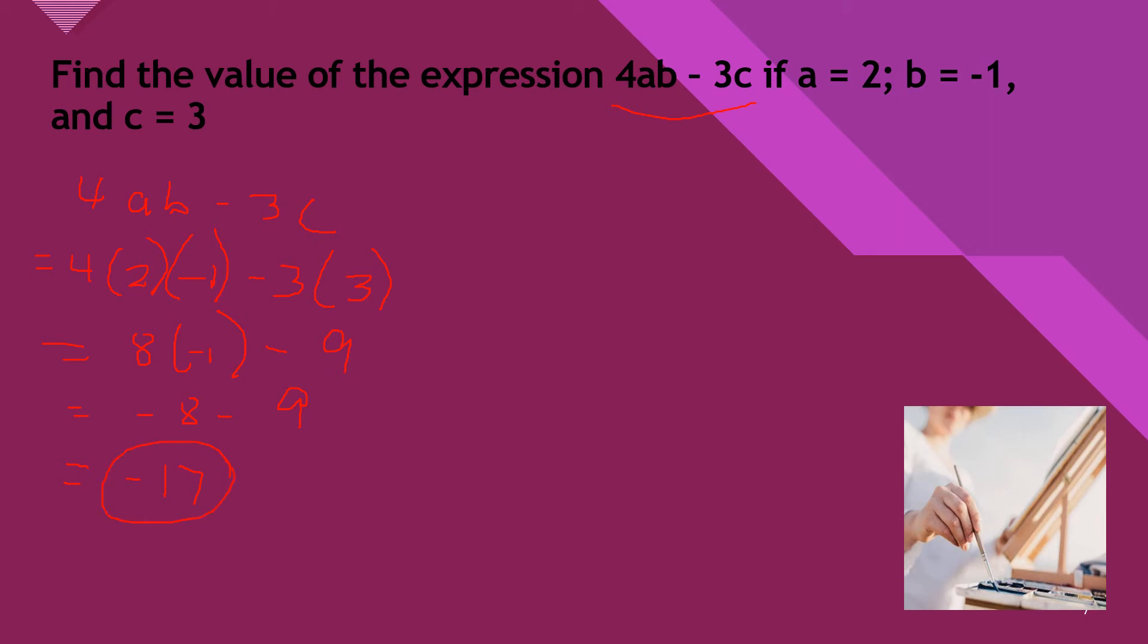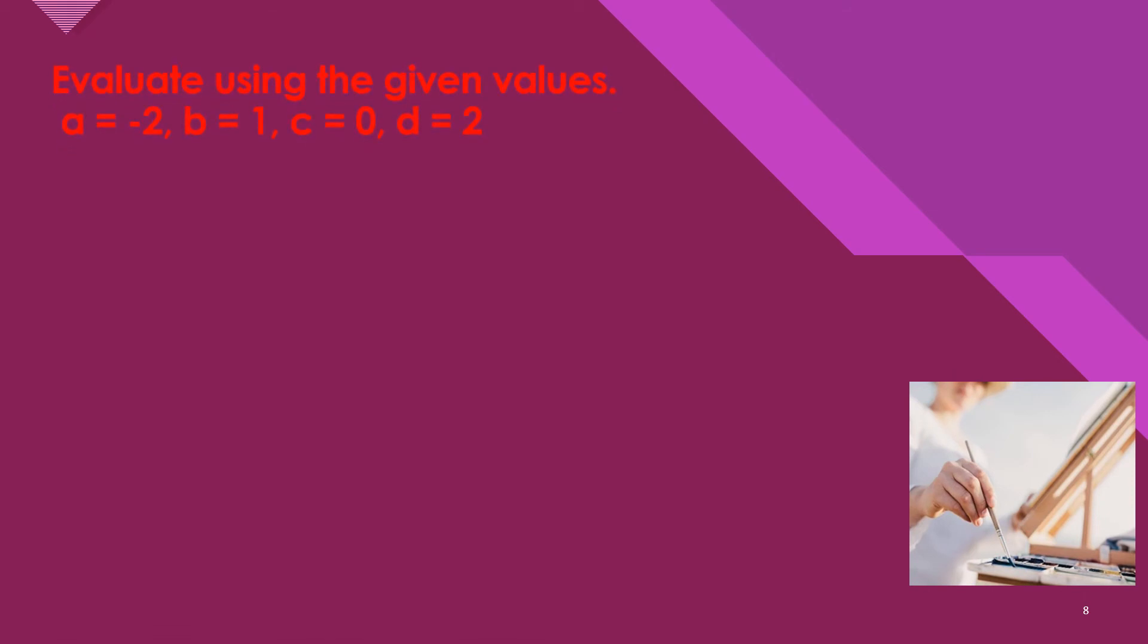Let's evaluate using the given values. We have A + B + C + D. So we have -2 + 1 + 0 + 2. The answer is 1 because 1 + 0 is 1.